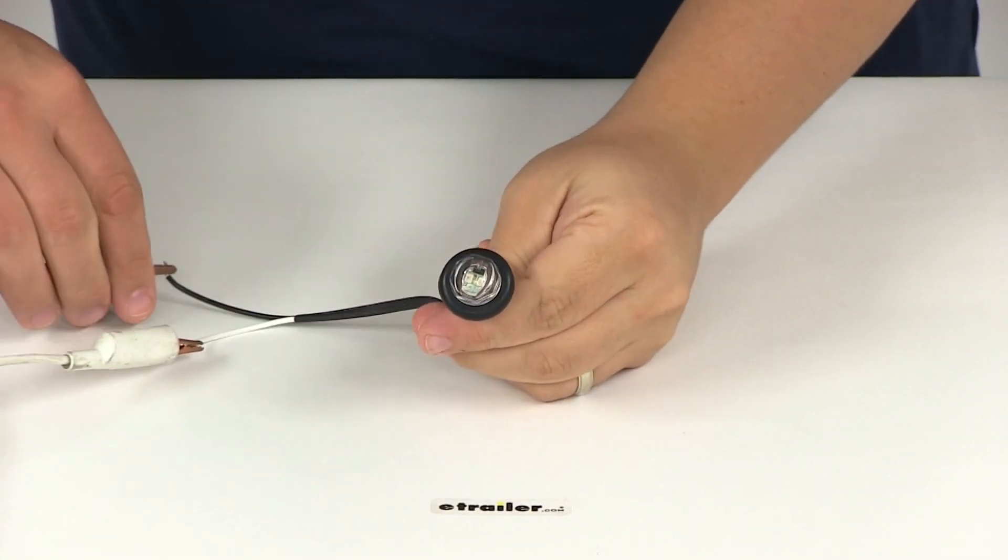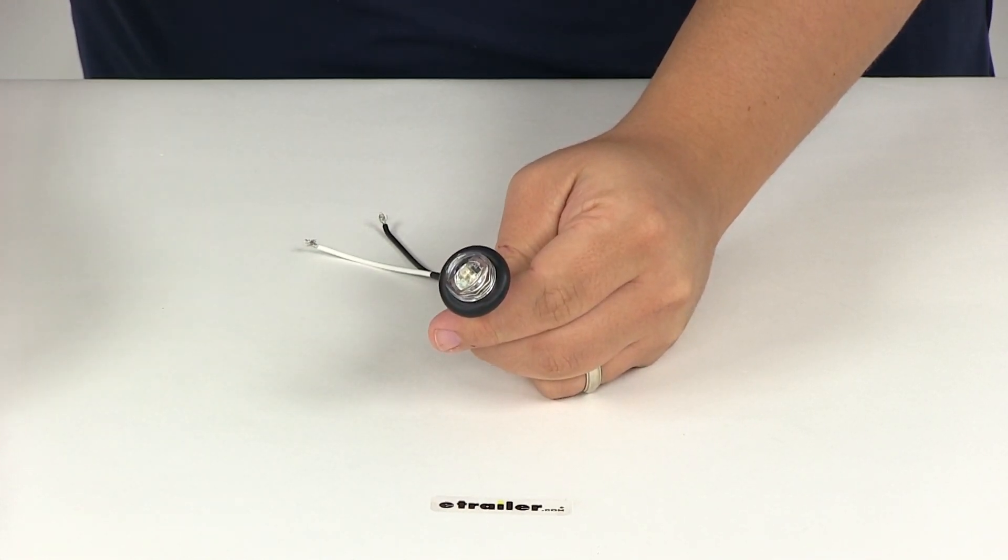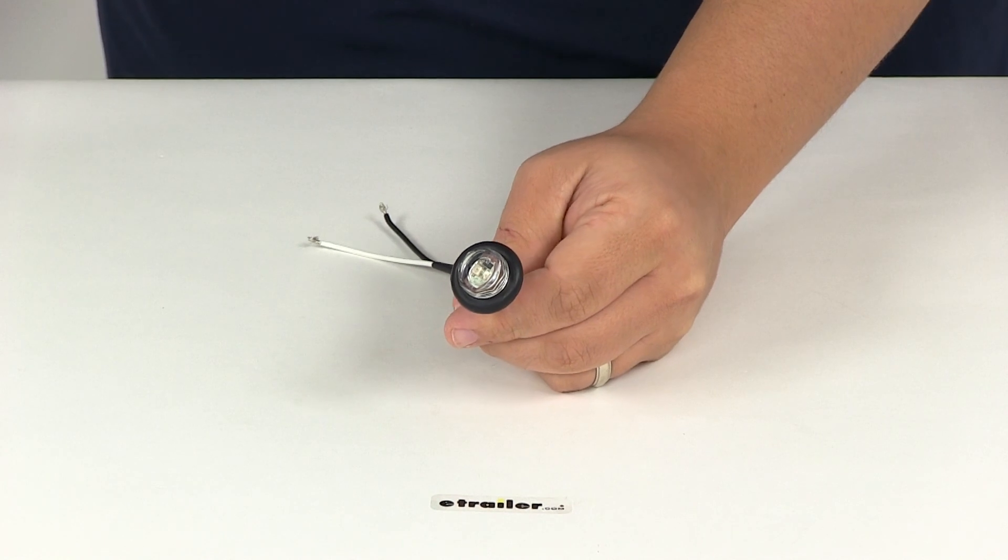That's going to do it for today's review of part number MCL11CAKB. This is the Optronics Mini LED side marker and clearance light.